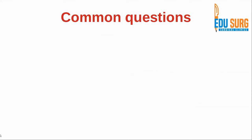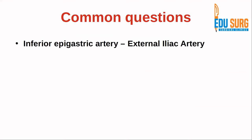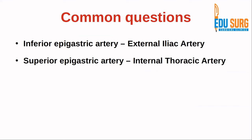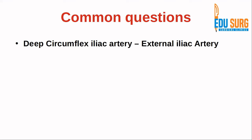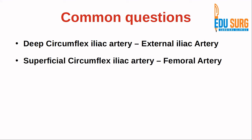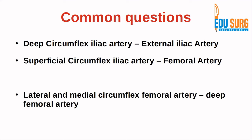To address some commonly confusing questions: we have seen that the inferior epigastric artery is a branch of the external iliac artery. The superior epigastric artery, logically, is the terminal branch of the internal thoracic artery. There is also a superficial epigastric artery, which is a cutaneous branch of the common femoral artery. Similarly, the deep circumflex iliac artery is a branch of the external iliac artery, while the superficial circumflex iliac artery is a branch of the femoral artery. The lateral and medial circumflex femoral arteries are branches of the deep femoral artery.